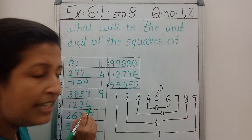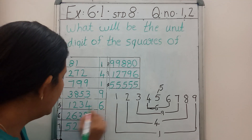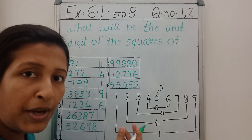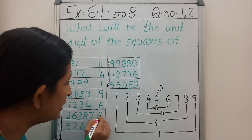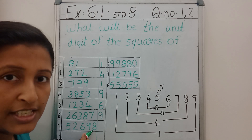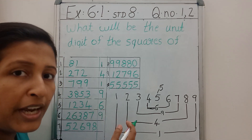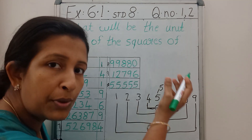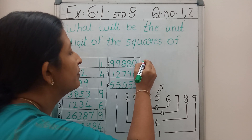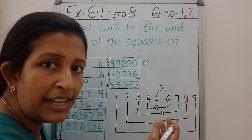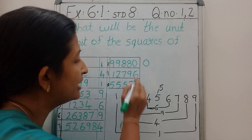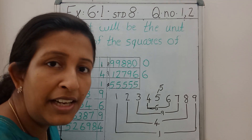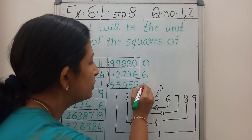4 times 4 is 16, and 16 is ending with 6. Without looking at the diagram, this number is ending with 7. What is the square of 7? 49 — so the square should end with 9. This number is ending with 8. Square of 8 is 64, so the square should end with 4. This number is ending with 0, so its square should end with 0. This number is ending with 6 — 6 times 6 is 36, so the square should end with 6. This number is ending with 5 — 5 times 5 is 25, so the answer is 5.